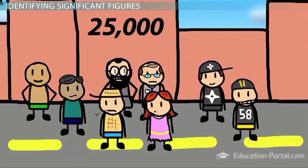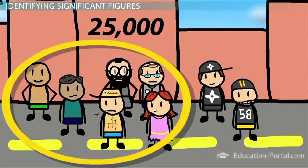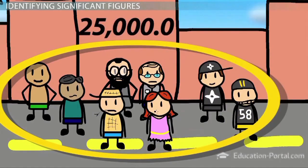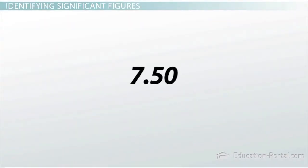For example, when finding the population of a town, the number 25,000 implies that the actual value is around 25,000, rounded to the nearest thousand. Whereas the number 25,000, with a decimal point at the end, implies that the actual value is 25,000. When you see a number, keep an eye out for the significant figures and decimal points.